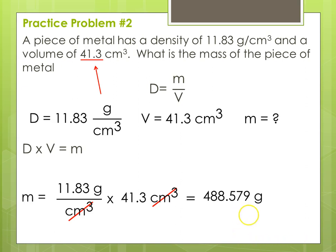So we need to come down to our answer and start counting from the left. Our third significant digit is the 8. The number immediately following it is a 5. The rule says 5 and above, you give it a shove — that means we're going to round our 8 up to a 9. So our answer is going to be 489, and our answer here is the mass is 489 grams.